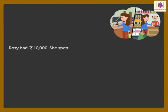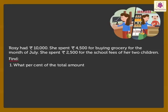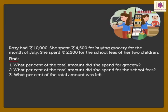Let's look at one more story problem. Rosie had 10,000 rupees. She spent 4,500 rupees for buying grocery for the month of July. She spent 2,500 rupees for the school fees of her two children. Find: 1. What percent of the total amount did she spend for grocery? 2. What percent of the total amount did she spend for the school fees? 3. What percent of the total amount was left with her?